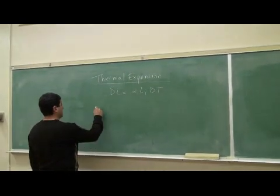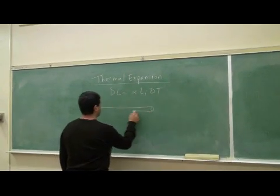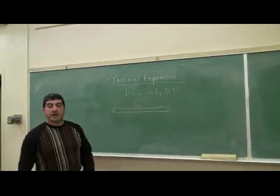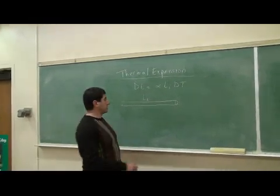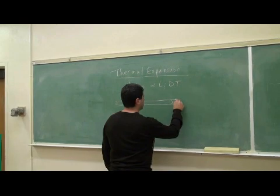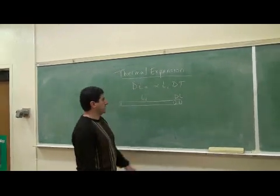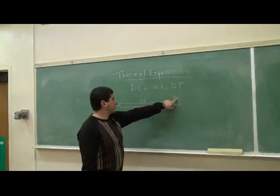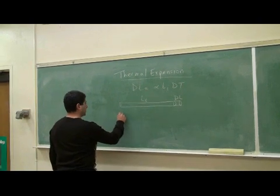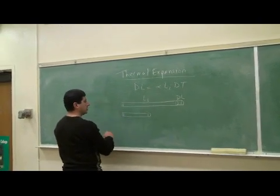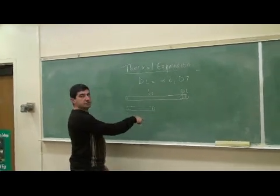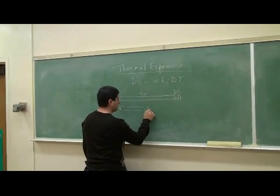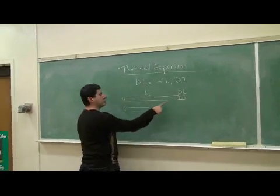What this means is that if the object has a certain initial length, L initial, and we heat it up by a certain temperature, the object will increase its length by a certain amount, delta L. The longer it originally is, the more it will increase its length. So if you have two objects and one is shorter by half, heating both by the same amount means the shorter one will increase its length by only half as much.